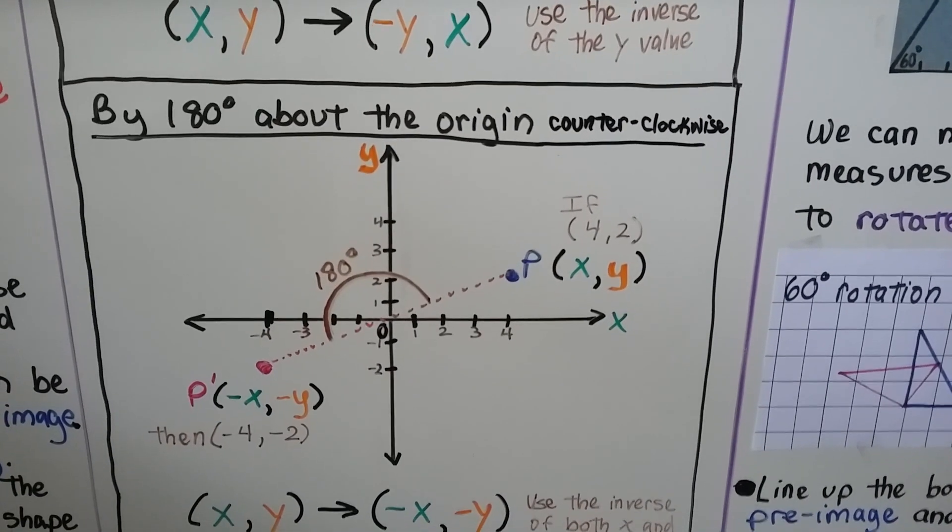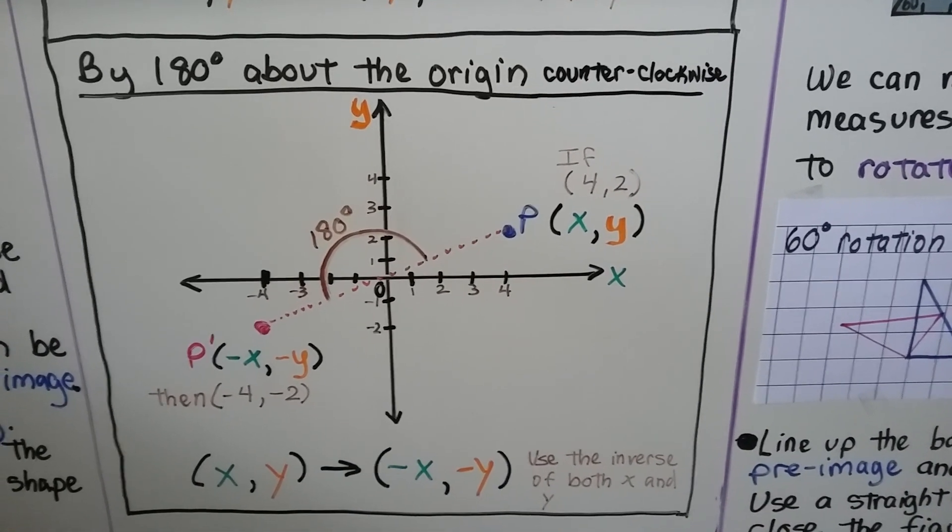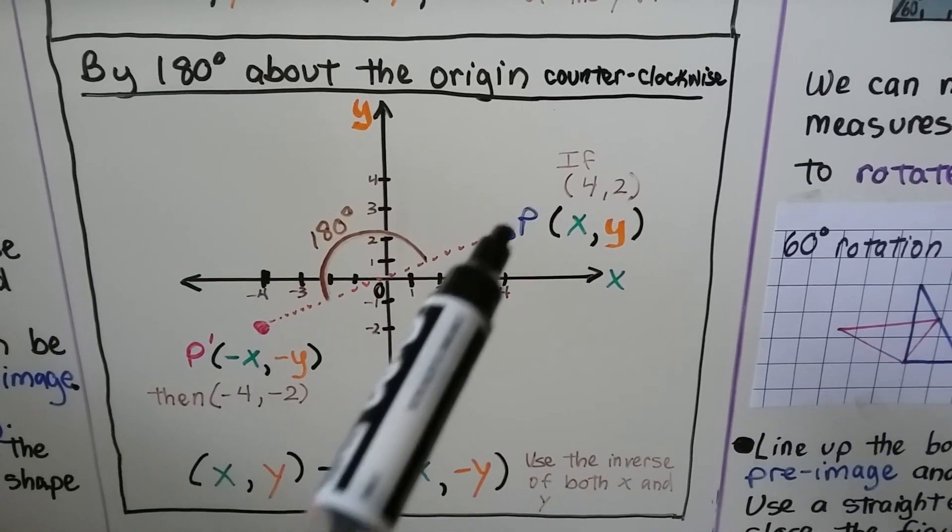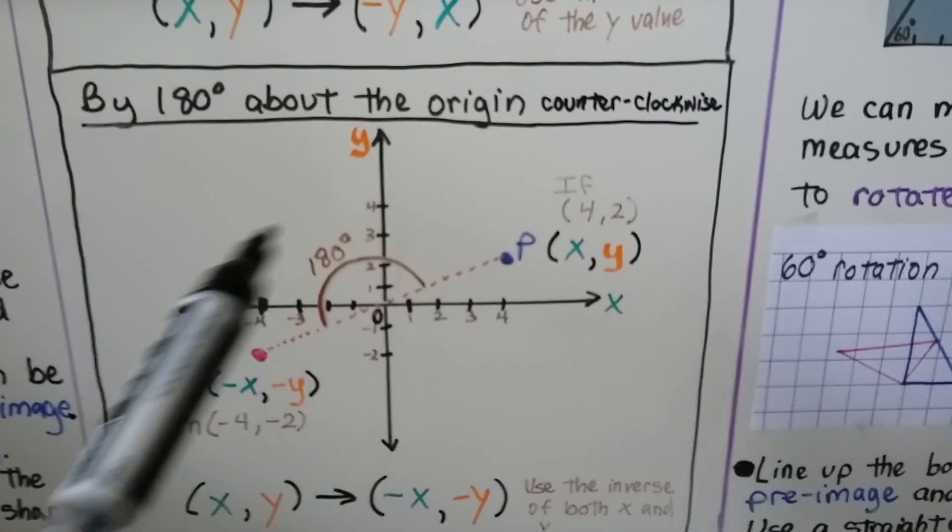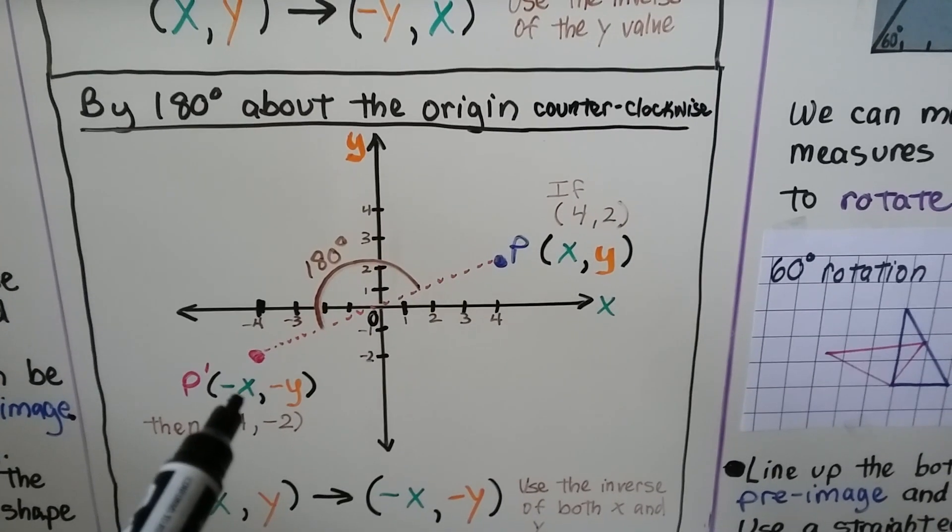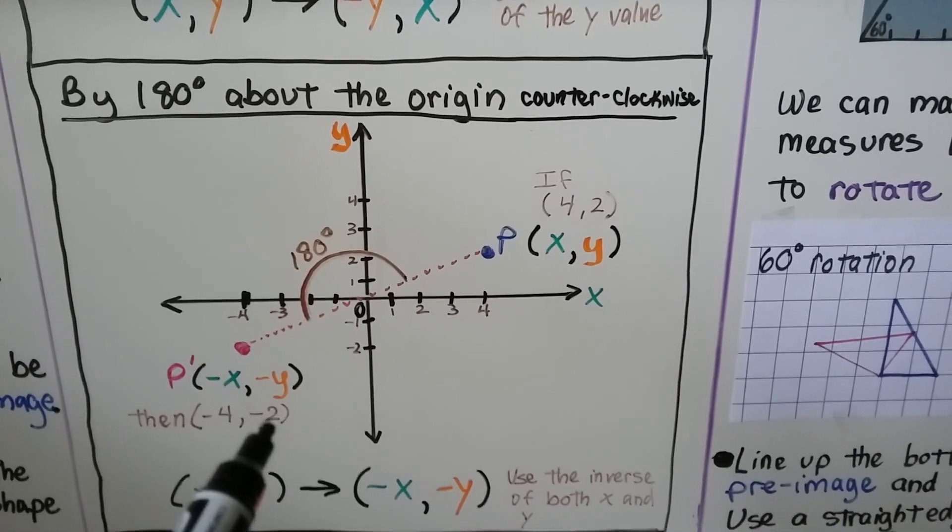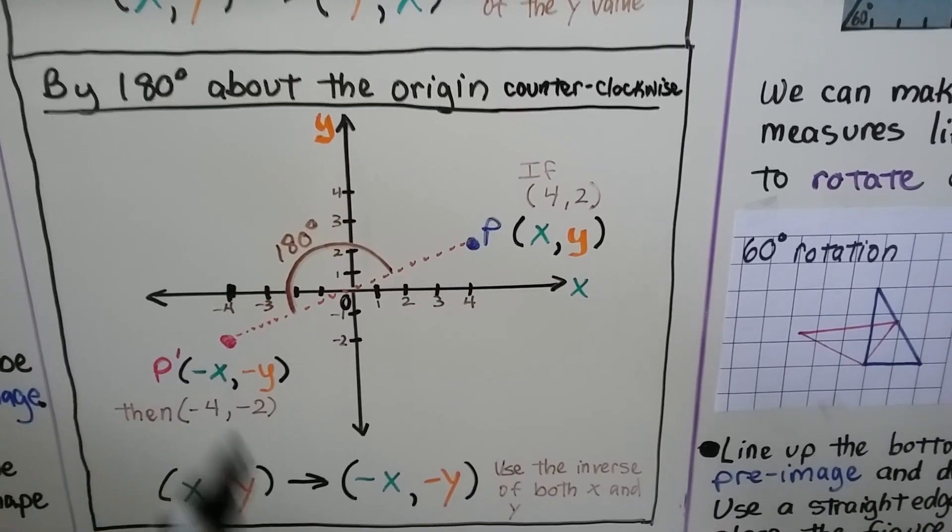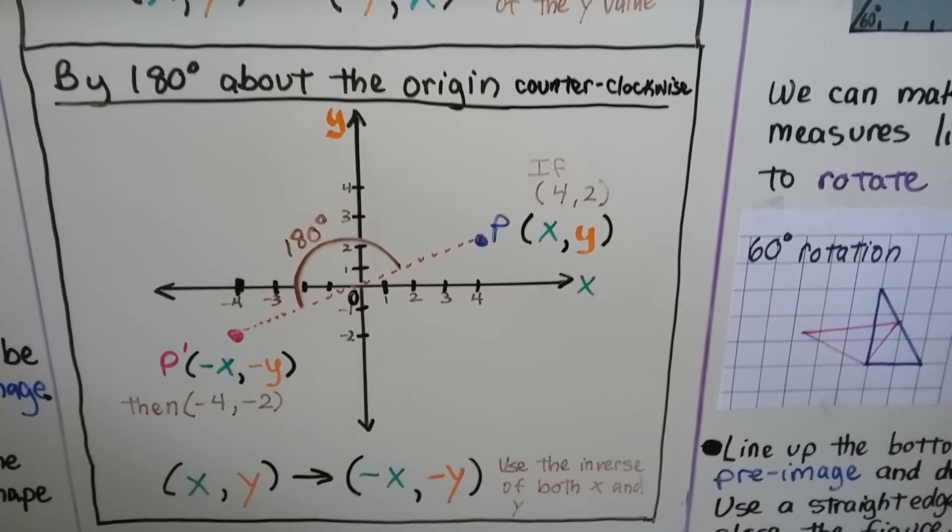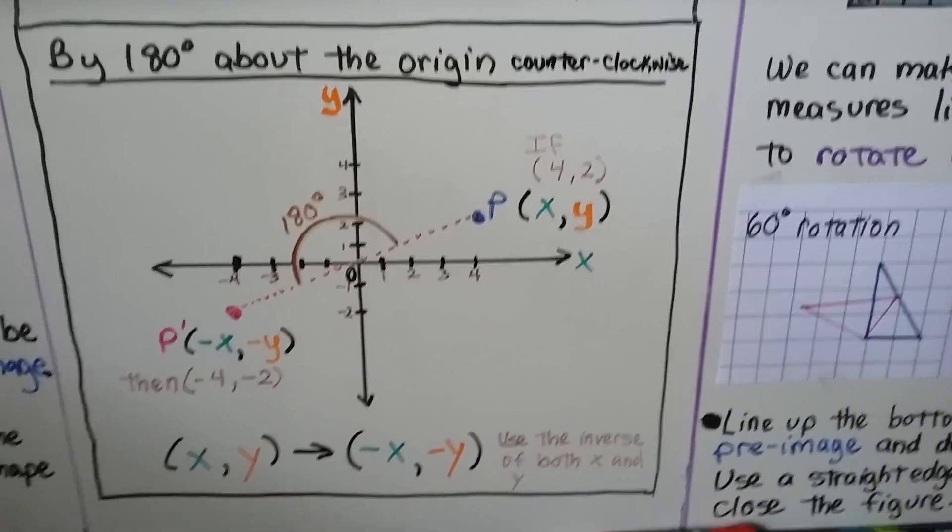If we want to rotate by 180 degrees about the origin counterclockwise, going 180 degrees, we're going to go from p, which is at 4, 2, to p prime, which is at negative 4, negative 2. So we have the inverse of x and the inverse of y when we rotate it 180 degrees about the origin counterclockwise.